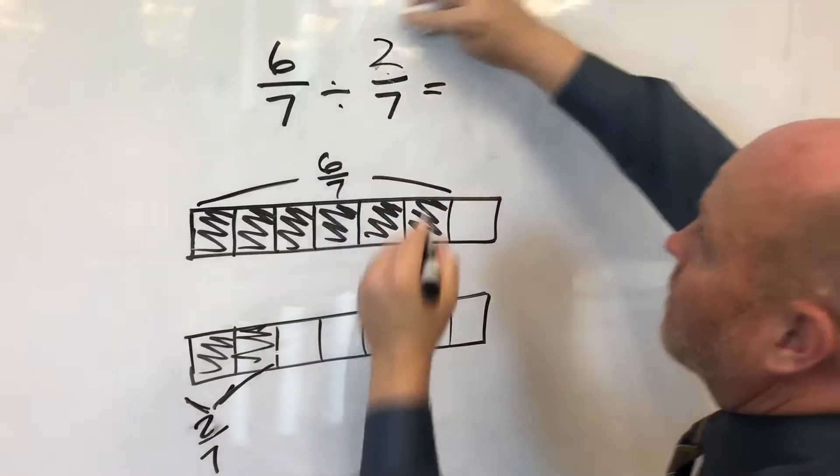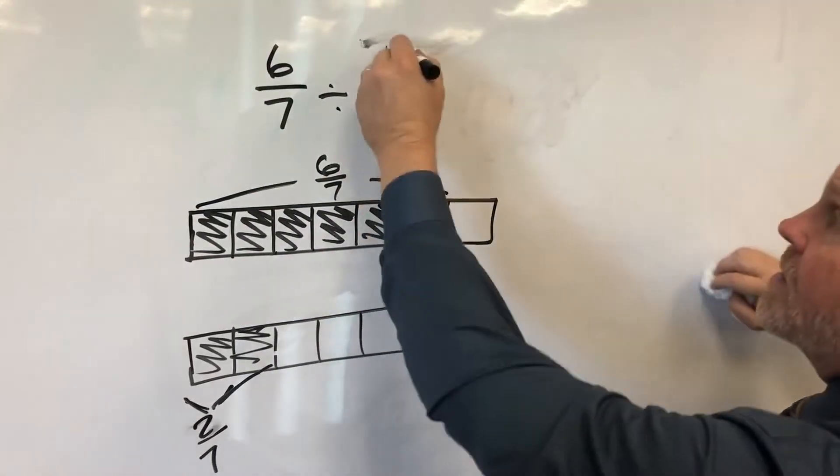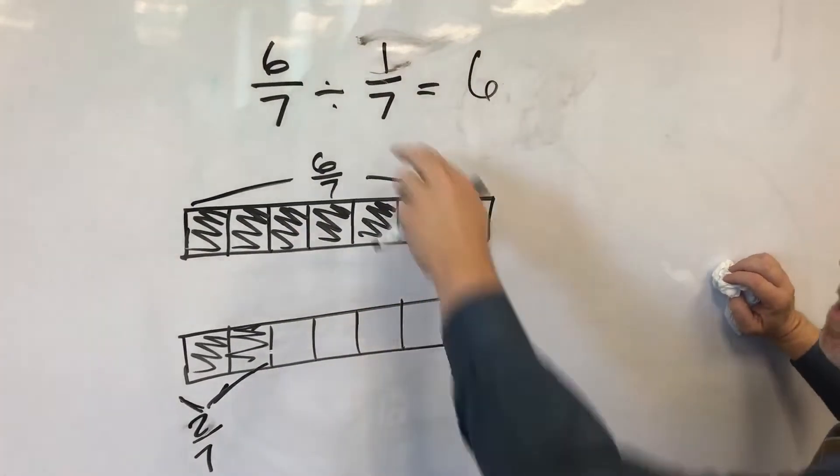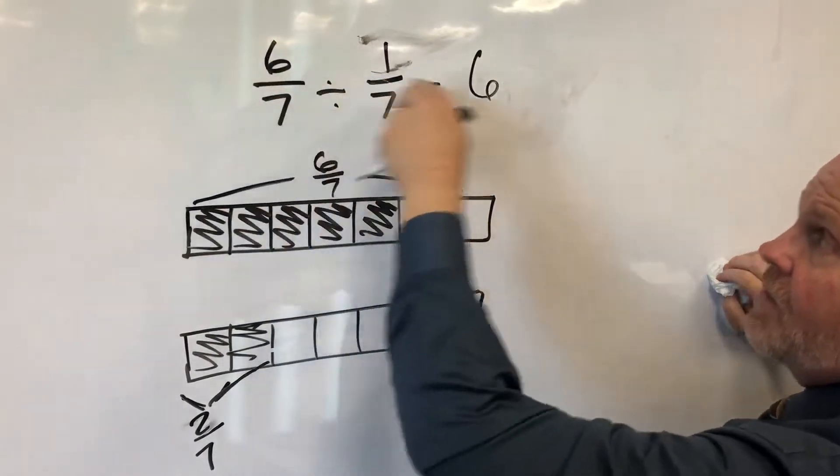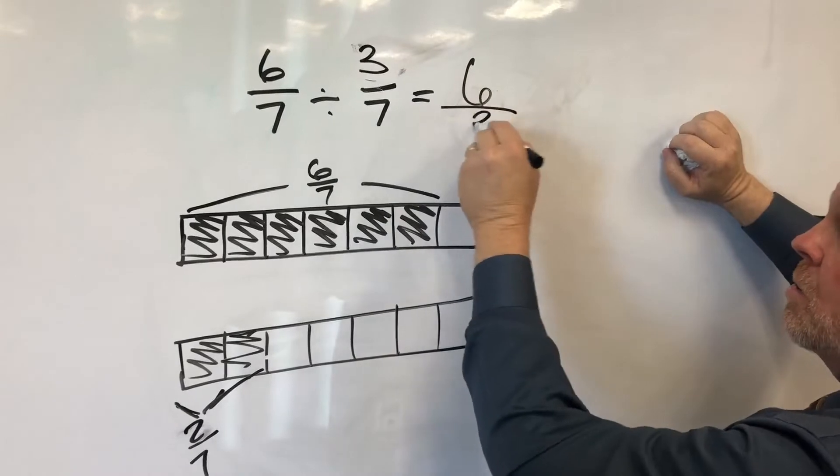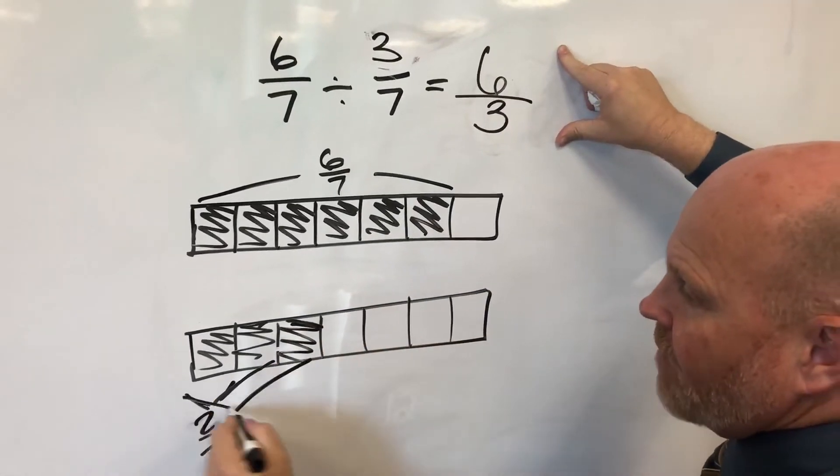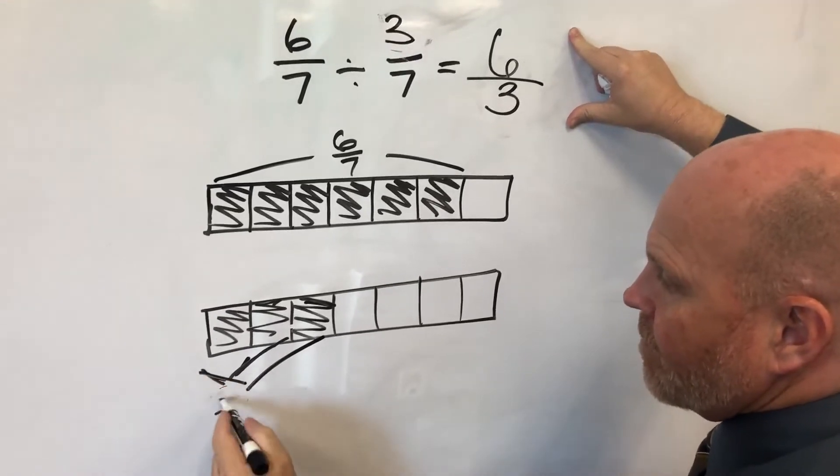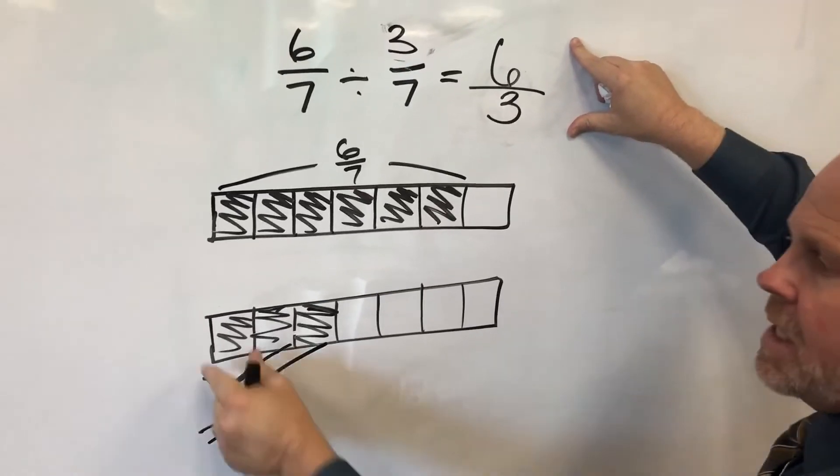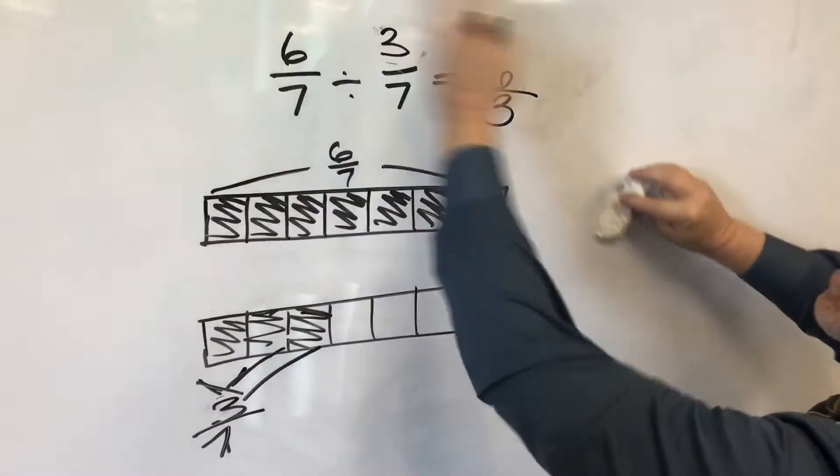Now if we wanted three sevenths, well, we know that if it was one seventh it would be six. One seventh goes into six sevenths six times. Three sevenths, we'd have to divide by three because three sevenths is three times as big as one seventh, so we have to divide by three. And you're starting to see the pattern.